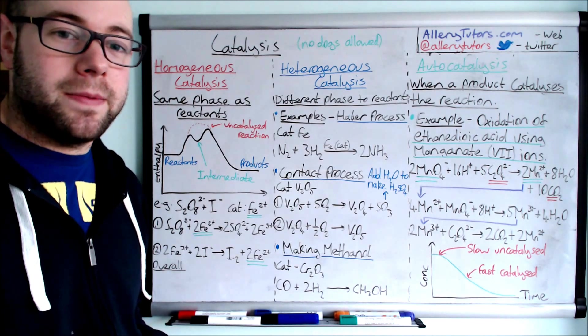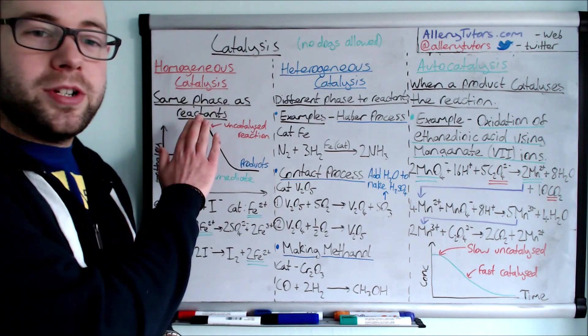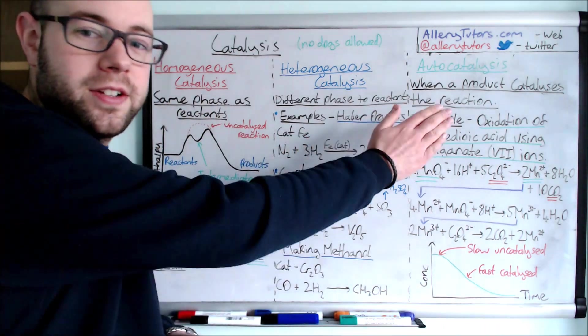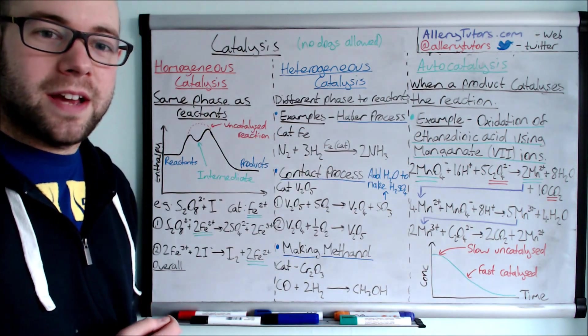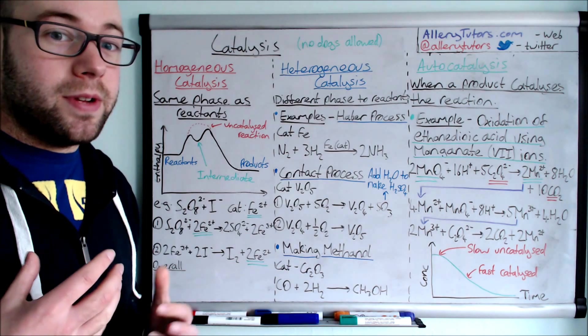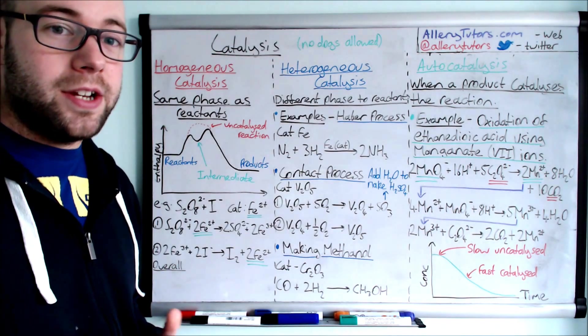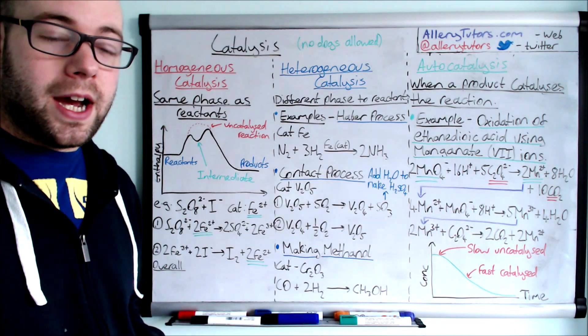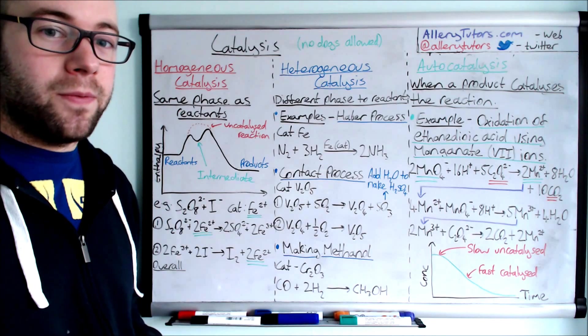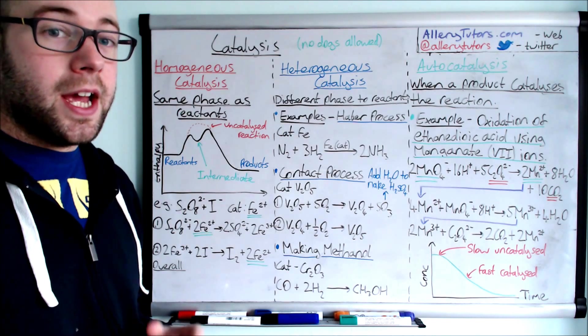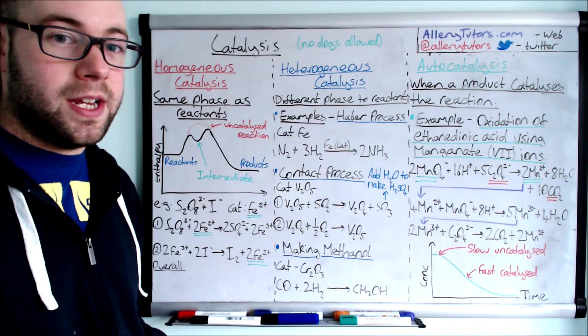We're going to look at three different types of catalysis: homogeneous catalysis, heterogeneous catalysis, and autocatalysis. We're going to look at the energy profile for at least two of them and show you some examples of where these catalysts can be used and how they work, along with all the equations that you need.